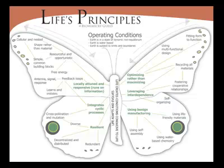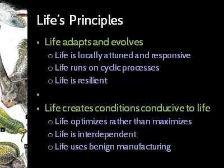This is what life's principles looks like, and if you haven't already gotten one, you've got a PDF of this. For those of you who are more linear thinkers, here's the list. Life's principles have two major headings: one is 'life adapts and evolves,' and the other is 'life creates conditions conducive to life.' Within each of those we've got sub-principles. One key thing about being a principle — and the reason we call it that — is that it's always true. Every living thing on Earth always exhibits all of life's principles.